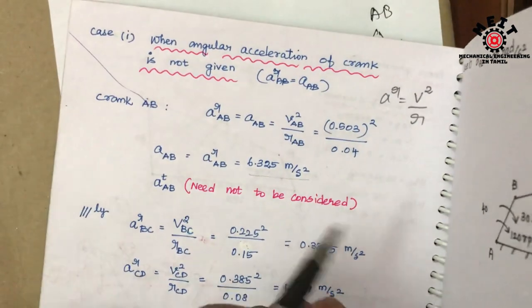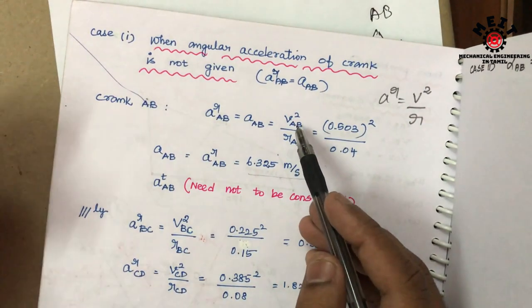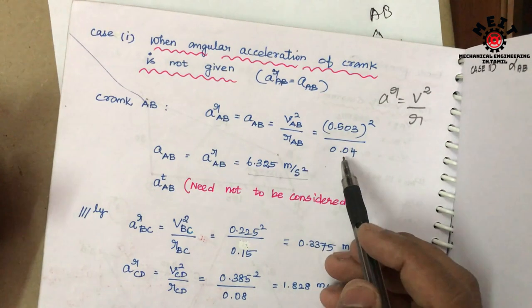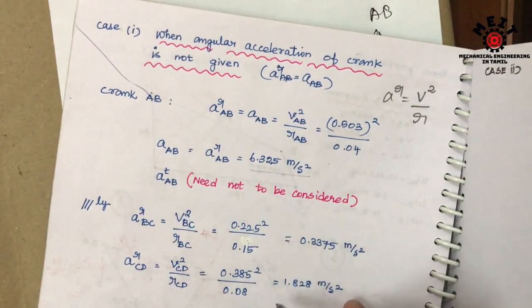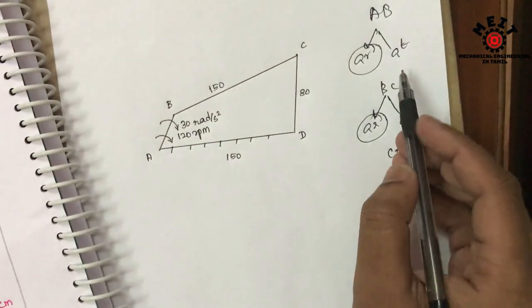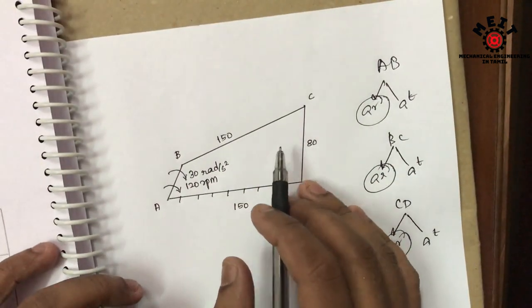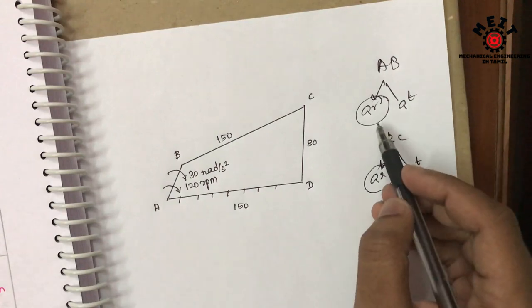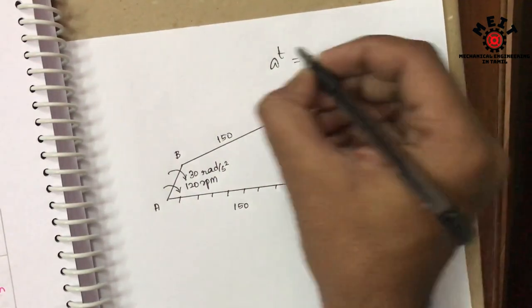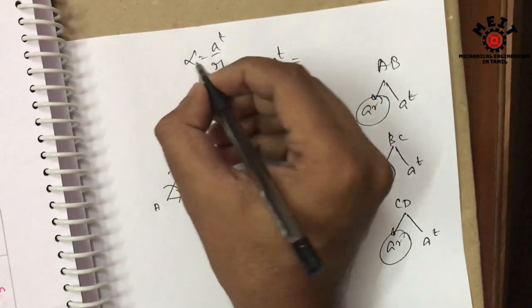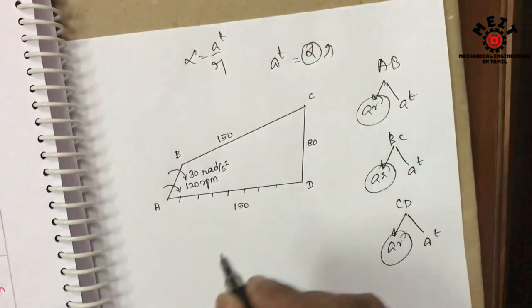AR is equal to V² / R, with the velocity value and the link length. We can calculate all the AR values. The AR values already done are: 6.25, 0.32, 1.8 — all links done. AT value: AT is equal to alpha × R. So if we take AT = alpha × R, that formula gives us the tangential acceleration. AT = alpha × link length.